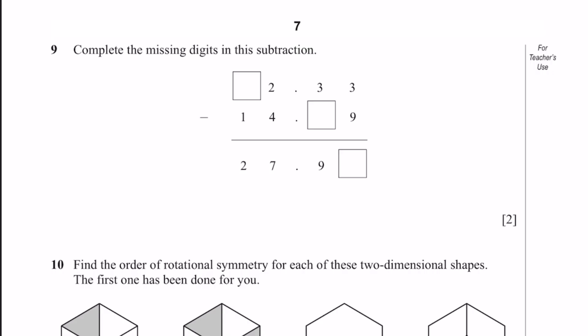Question 9. Complete the missing digits in this subtraction: dash 2.33 minus 14.9 equals 27.9 dash. To find this digit, we borrow to get 13, and 13 minus 9 is 4. Now, 2 minus something is 9. When we borrow, we get 12. 12 minus 3 is 9. Now, 11 minus 4 is 7. When we subtract 1 from this number for borrowing, we subtract another one, we get 2. If we put 4 here and minus 1 for borrowing, it becomes 3, and 3 minus 1 is 2. So the number here is 4. That's the answer.